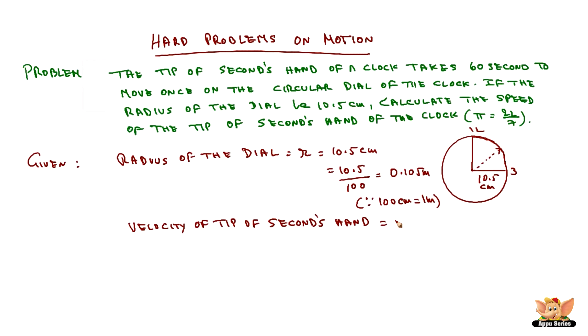Now, velocity of the tip of the seconds hand be given as v, and since it is a circular motion, v is equal to 2 pi r by t, where r is equal to 0.105 meter and t is 60 seconds.